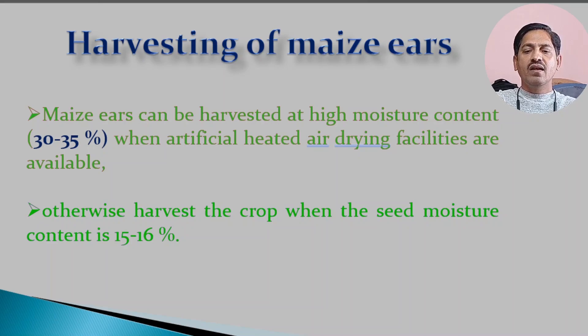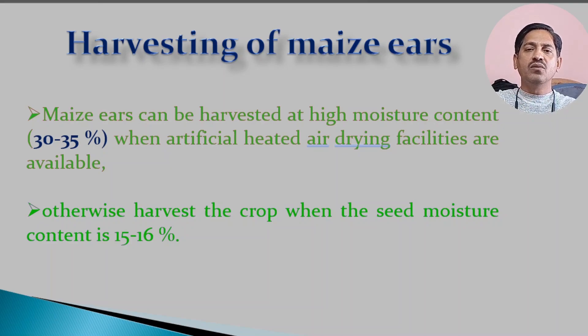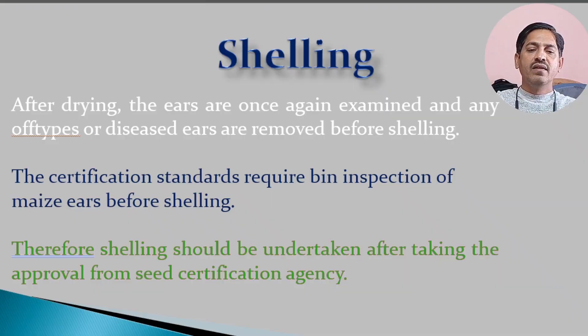Then comes harvesting. If you have an artificial air-drying facility, you need to harvest the crop at 15–16% moisture content. You can assess maturity based on the typical visual symptoms of maize, and once the crop is matured you proceed to harvest.